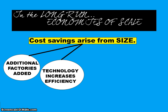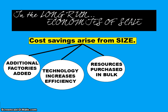Large companies can afford the best technology, which increases efficiency of production. They can also purchase resources in bulk — what I call the Sam's Club or Costco effect. If you shop at Sam's Club or Costco, you get toilet paper cheaper per roll than at Target or smaller stores, but you go home with a hundred rolls at a time. You can get materials cheaper, but you need storage capabilities and the capital upfront to purchase resources in bulk.